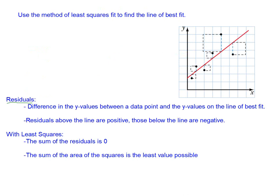We use the least squares method. You can see some points on the graph, along with squares. We should talk about something called a residual. Residuals are the difference in the y-values between a data point and the y-value on the line of best fit. So if we look at a point, the residual is the difference between its y-value and the y-value on the line for that same x-value.